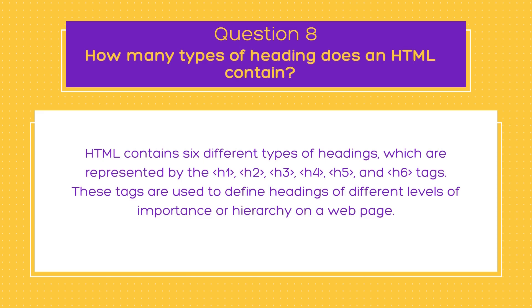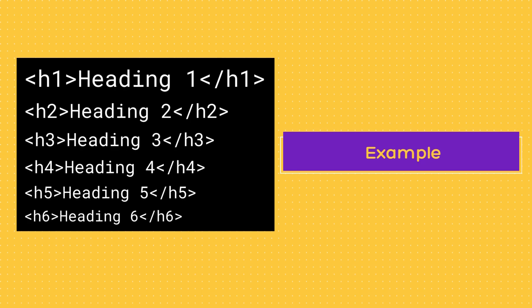The next question is a very common and basic interview question: how many types of headings does HTML contain? HTML contains six different types of headings, represented by the h1, h2, h3, h4, h5, and h6 tags. These tags are used to define headings of different levels of importance or hierarchy on the web page. The h1 tag represents the highest level of importance or main heading, while h6 represents the lowest level.